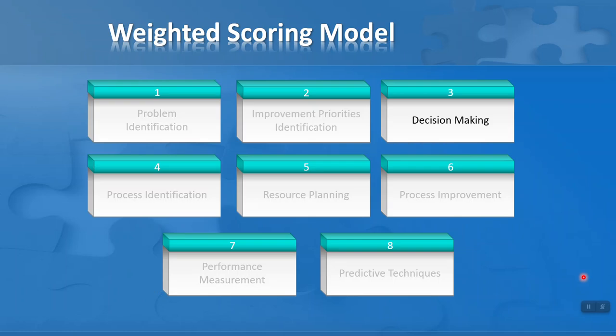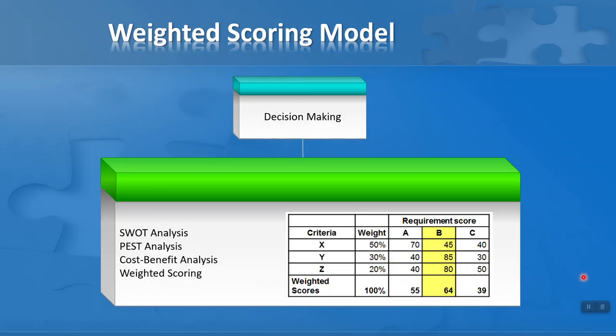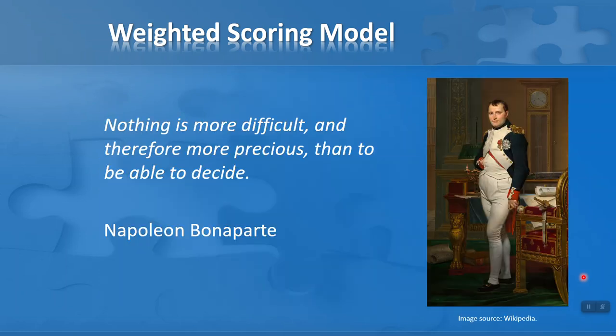The weighted scoring model is part of Section 3, Decision-Making, in our problem-solving techniques curriculum. It's the fourth of four techniques in this section. Let's start with an inspirational quote from Napoleon Bonaparte: 'Nothing is more difficult and therefore more precious than to be able to decide.' It's important that we're able to make decisions, and we need techniques to help us do so. The weighted scoring model will help us with that.